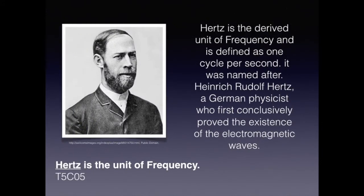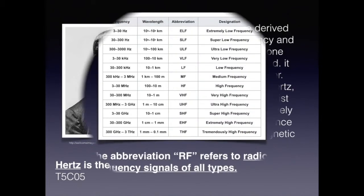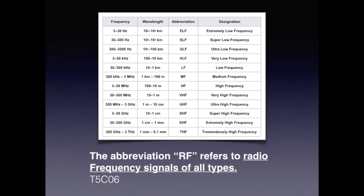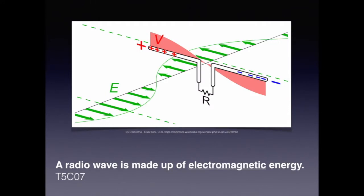Hertz is simply an alternating current frequency of one cycle per second. For the exam, Hertz is a unit of frequency. Radio frequency ranges from subaudible or extremely low frequency to the terahertz range called tremendously high frequency. For the exam, just know that RF refers to radio frequency signals of all types. Radio waves are made up of electromagnetic energy.